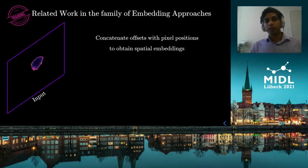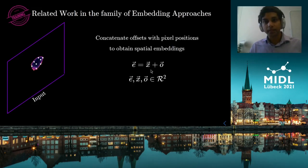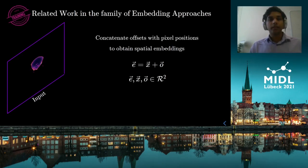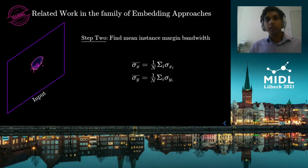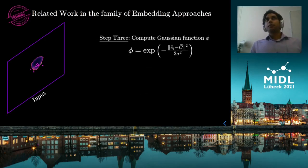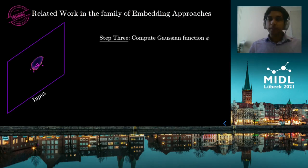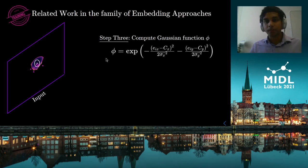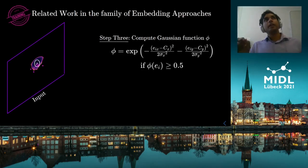First, they concatenate the offsets with the pixel locations to obtain the spatial embeddings E, where pixel locations are X and offsets are O. So if these white dots are the pixel locations sampled from this object, then by concatenating the offsets we end up with the pink spatial embeddings. Next, by averaging the bandwidths from pixels belonging to this object, they obtain the mean instance bandwidth along x and y. Then they compute a Gaussian function Phi, which says how close is my pixel embedding to the object's center. If the margin bandwidths are not the same, it becomes a function of the margin bandwidth along x and y. If a pixel's spatial embedding leads to Phi greater than 0.5, that pixel is assigned to the instance.